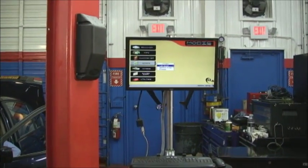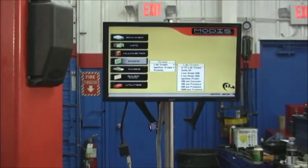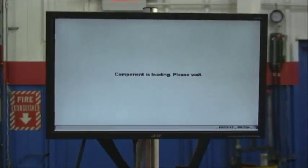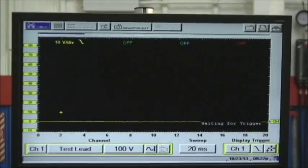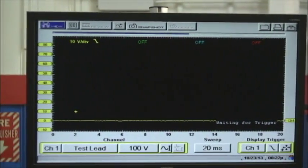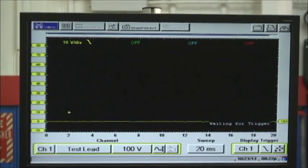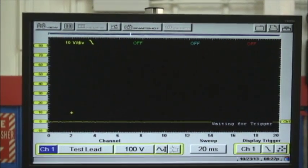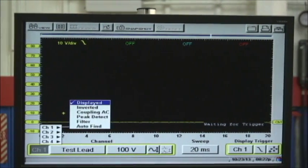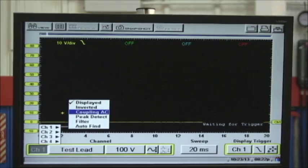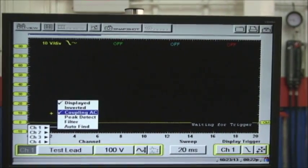I'm going to go down to lab scope, I'm going to go to four channel scope. All I really want is one channel, and I'm going to go over to channel one. I'm going to couple it AC. So I'm going to stop there for a second, you see the check mark there, AC?